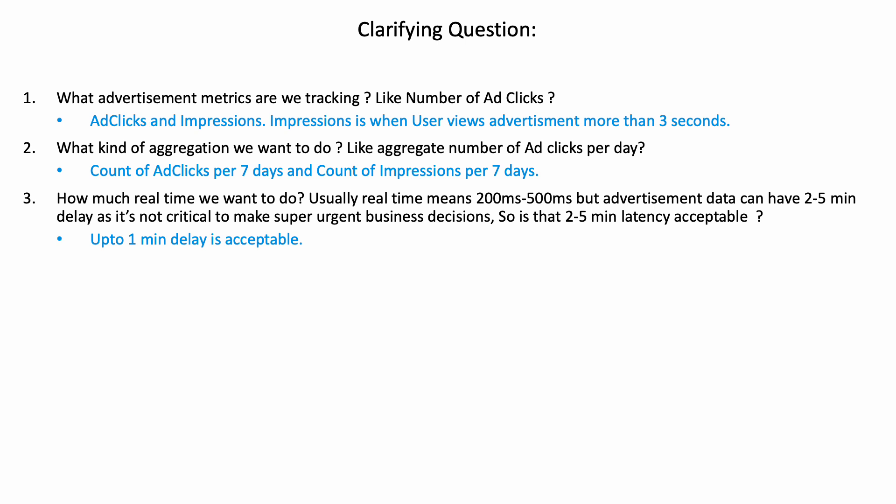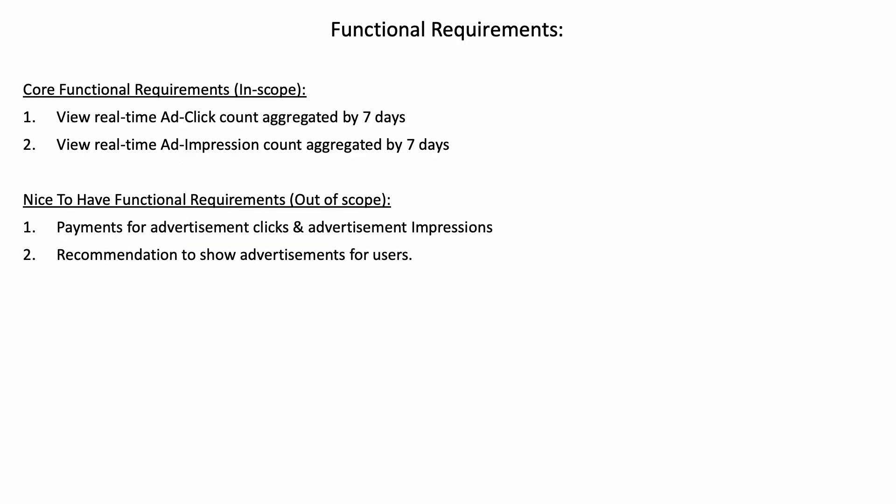Based on the question, the interviewer would answer to make the requirements more clear. For example: we want to track ad clicks and impressions — impressions is when a user views the advertisement for more than 3 seconds. We want the aggregation of ad clicks and impressions per 7 days, so we need to track count of ad clicks per 7 days and count of impressions per 7 days. One minute of delay is acceptable.